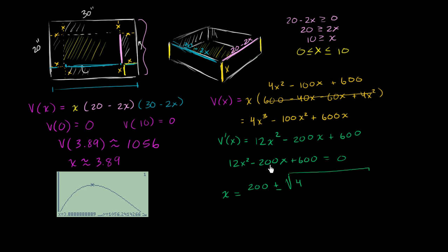So negative 200 squared - that's going to be 4 with 4 zeros, so that's going to be 40,000 minus 4ac. So minus 4 times 12 times 600. All of that over 2 times a, so all of that over 24. And I'll take out the calculator again to try to calculate this.